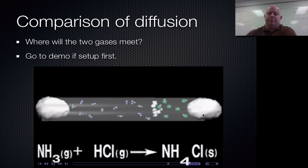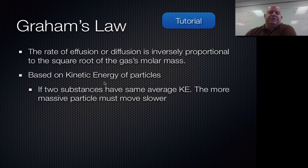So we see that because the hydrogen chloride is heavier, it moves slower, where the ammonia is lighter, so it moves faster. So they're not going to meet in the middle. They're going to meet further down the tube towards where the hydrogen chloride gas is at for this one.